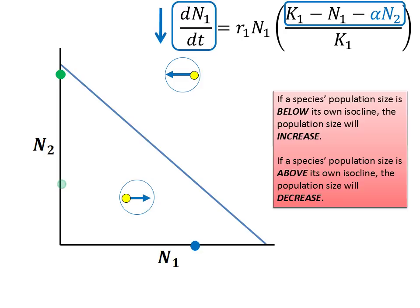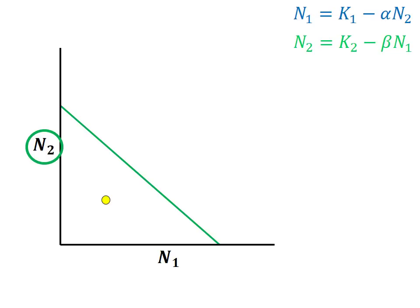I think you can probably guess where we are headed next from there. We can complete the exact same analysis with the species 2 isocline, only now the species of concern is on the vertical axis. If the n1, n2 population plot point is below the species 2 isocline, species 2 will increase. If it is above, species 2 will decrease.